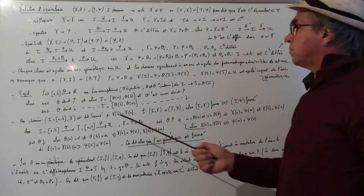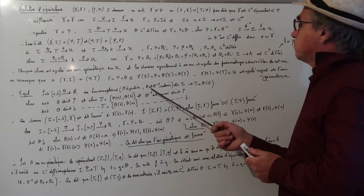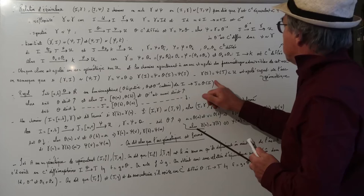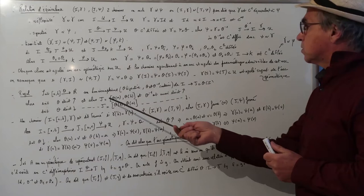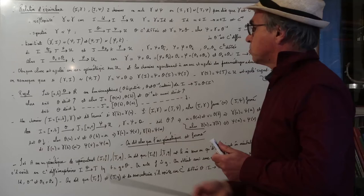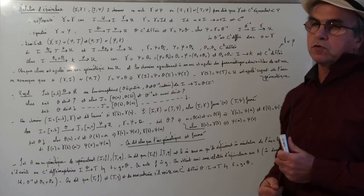Je rappelle que si θ est un homéomorphisme, alors soit θ est strictement croissant, et alors J est de la forme [θ(A), θ(B)], et θ⁻¹ est aussi strictement croissant ; soit θ est strictement décroissant, alors J est de la forme [θ(B), θ(A)], et θ⁻¹ est aussi strictement décroissant.